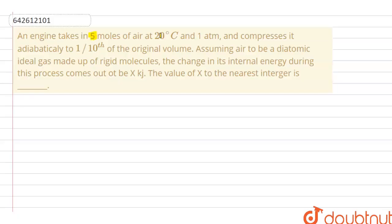The question says that an engine takes in 5 moles of air at 20 degrees Celsius and 1 atmospheric pressure, and compresses it adiabatically to one-tenth of its original volume. Assuming air to be a diatomic ideal gas made up of rigid molecules, the change in internal energy during this process comes out to be x kilojoules. We need to find the nearest integer value of x.